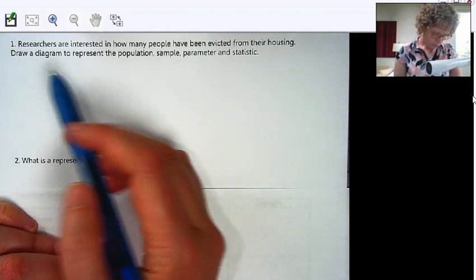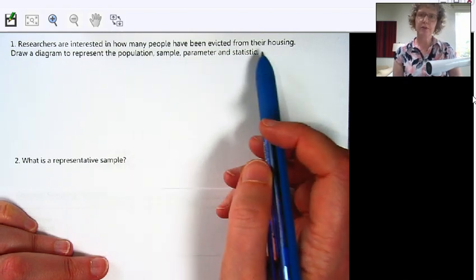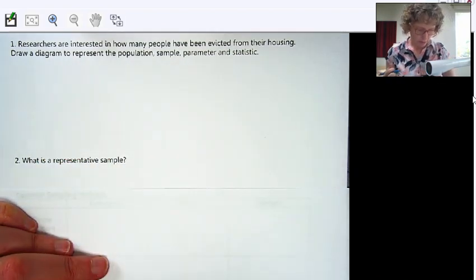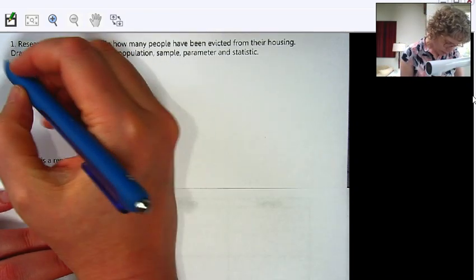So let's look at this example. Researchers are interested in how many people have been evicted from their housing. Draw a diagram to represent those four terms: population, sample, parameter, and statistic. Okay, so let's draw a big circle.